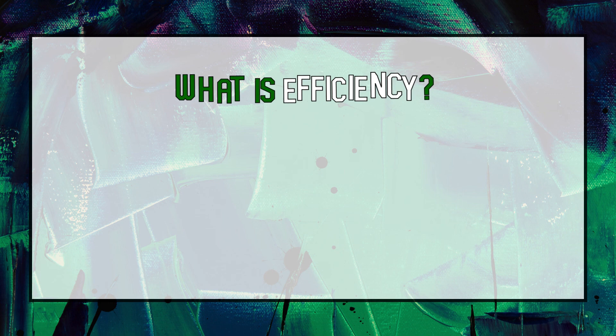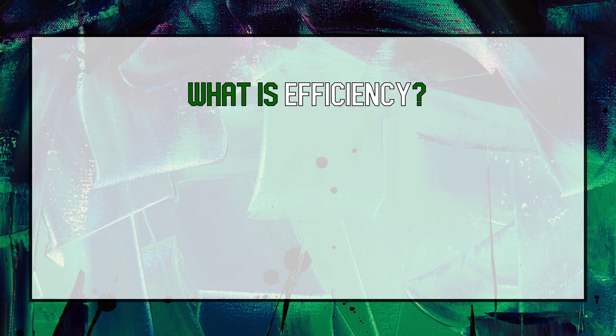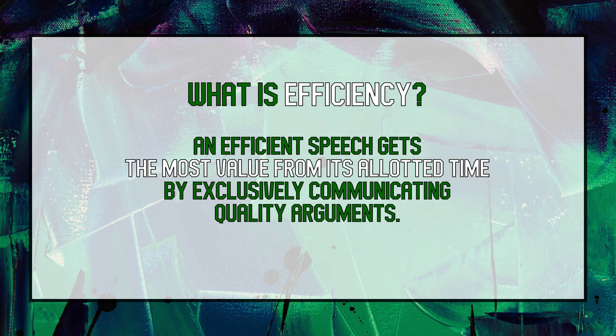So what is efficiency? As Robinson defines it, efficiency in public speaking means eliminating waste. An efficient speech effectively communicates arguments without wasting any of its allotted time. We could say that a speech is efficient if it effectively communicates the maximum amount of content within the allotted time. But even 'maximum amount' can be misleading — it's not just about the quantity of arguments communicated, it's also about the quality of those arguments. An efficient speech gets the most value from its allotted time by exclusively communicating quality arguments. No time is wasted.